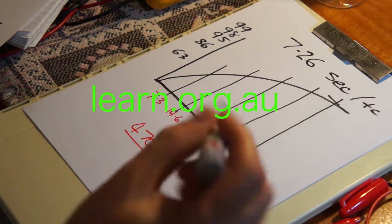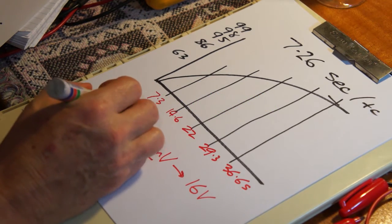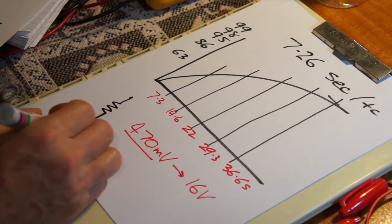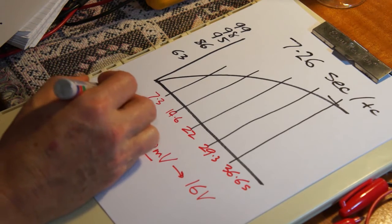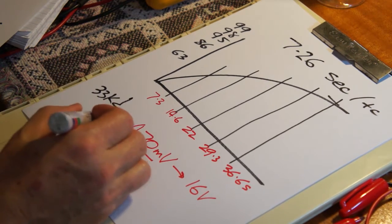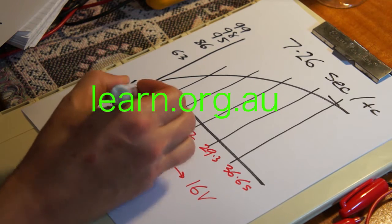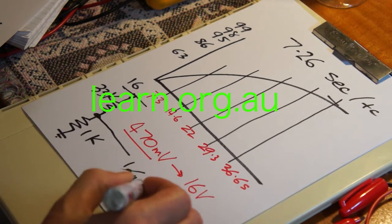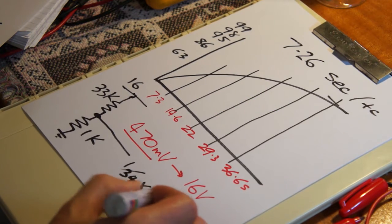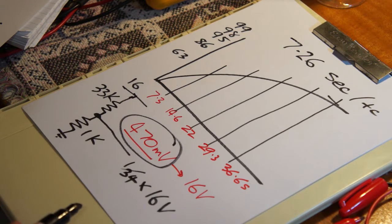Well, that comes down to the fact that we had our voltage divider set up between 33k and 1k. So 1k down the bottom, 33k at the top. And that means that if I've got 16 volts at the top, which I do have, I'll have 1/34th times my 16 volts. And that'll be that 470 millivolts.